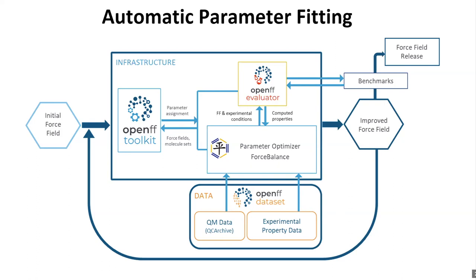But what this process doesn't address is exactly what parameters one is optimizing — what are the appropriate Lennard-Jones types for which one has numerical parameters to adjust? What are the bond types, and so forth? This has been the topic of some work at Open Force Field, really led by Caitlin Bannon when she was a graduate student in David Mobley's lab — the idea of coming up with a method of automatically assigning types. But it's still, I think, an unsolved problem.